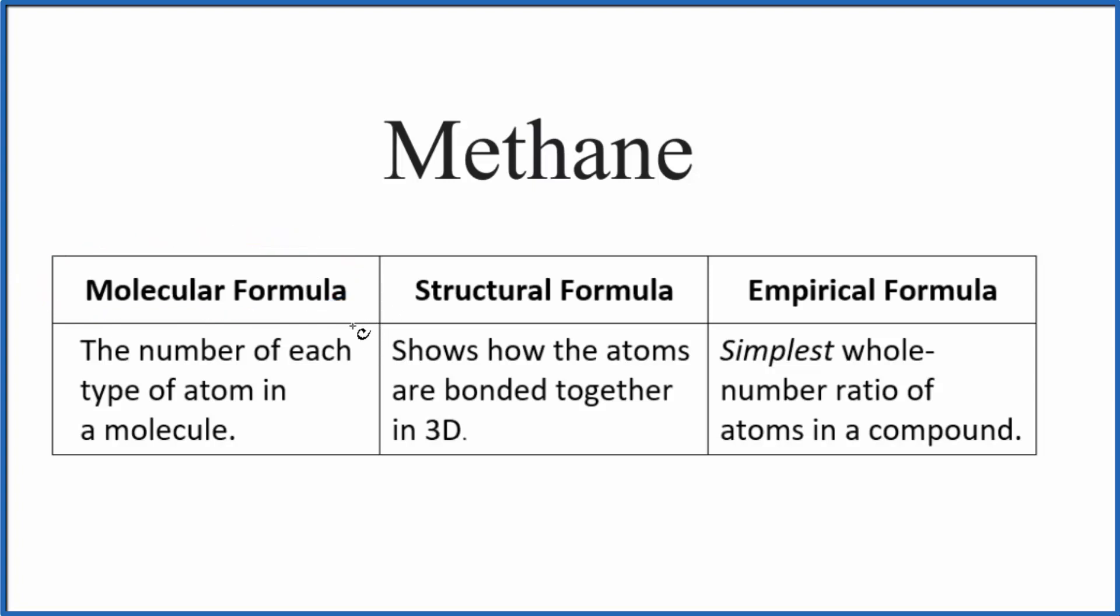Let's start out with the molecular formula. That tells us the number and type of each atom in the methane molecule. So we look at the molecular formula, that is CH4. We have the one carbon, we don't write the one, and four hydrogens in each molecule of methane.